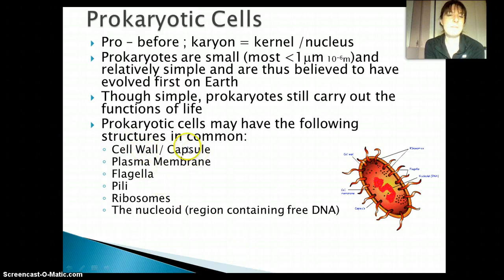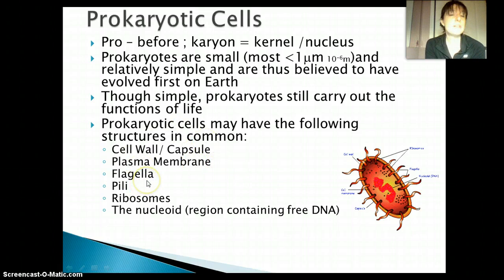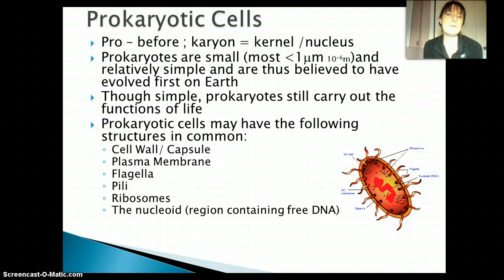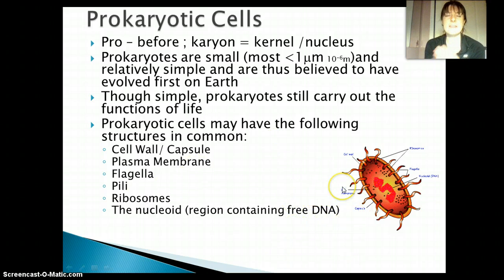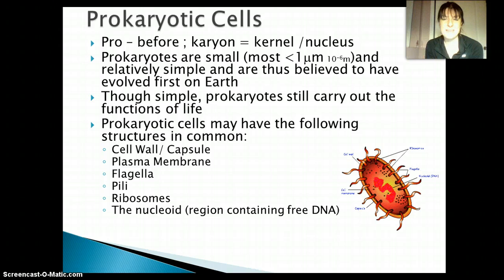They're all going to have a cell wall, some have a capsule, they're all going to have a plasma membrane or cell membrane. Most are going to have flagella or something similar, pili, ribosomes, and then a nucleoid region. One thing to keep in mind is that their DNA is not in a nucleus — because of that, it's not nearly as compact, it doesn't associate with protein, it's just sort of floating in the center.